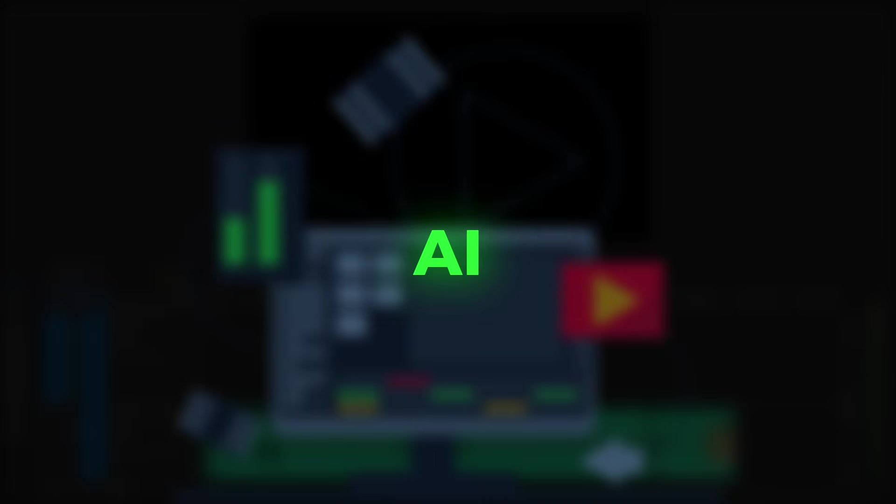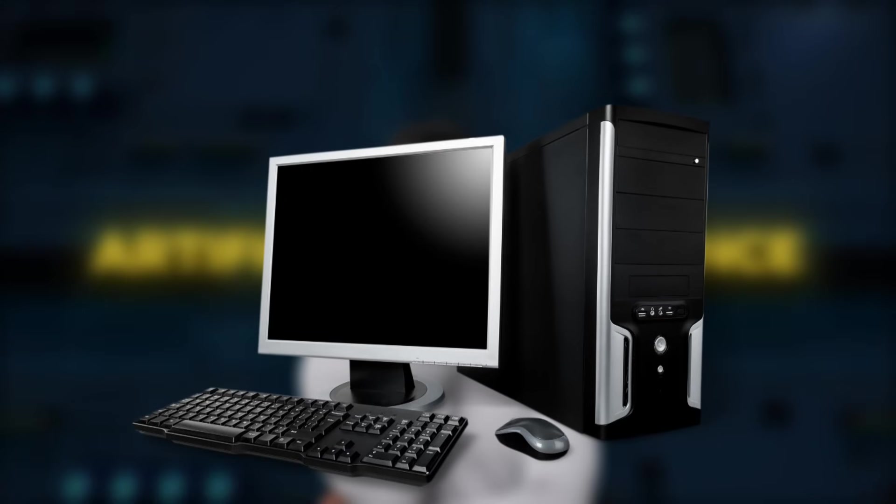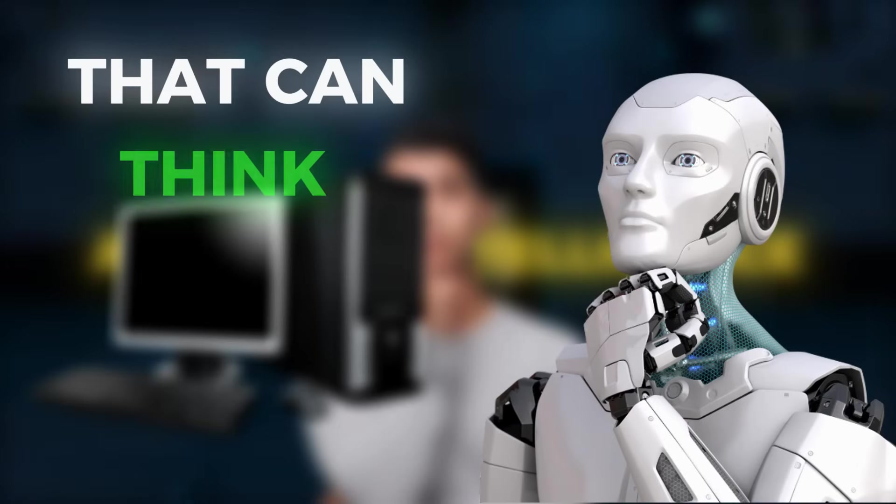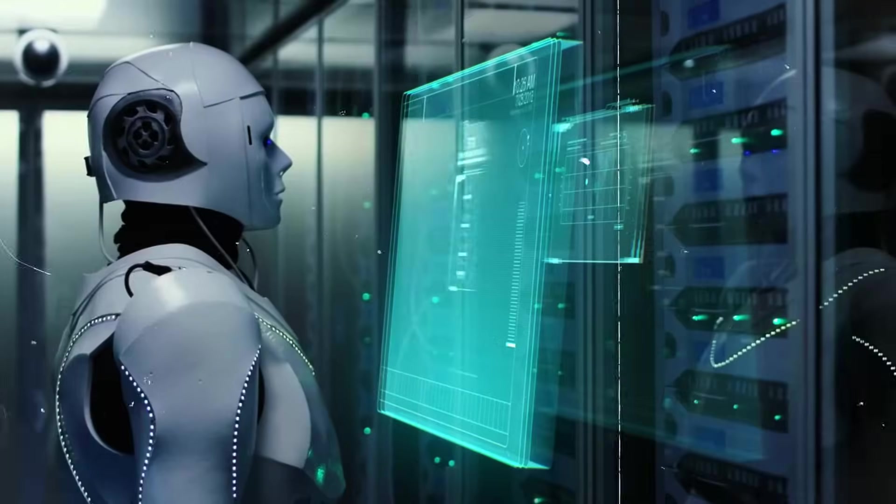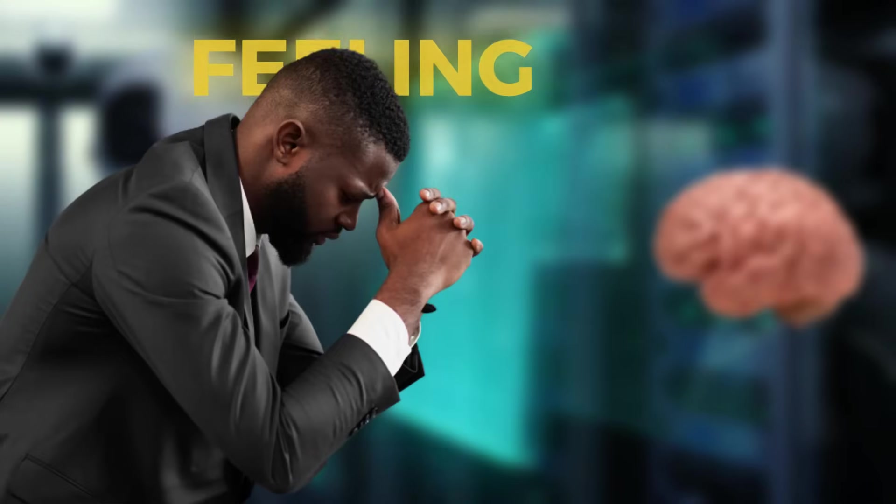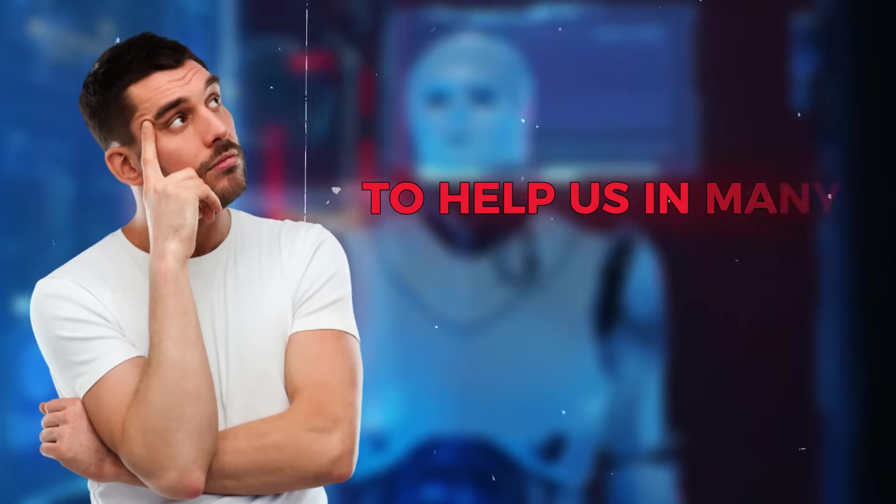Let's get started with AI. AI stands for Artificial Intelligence. It means computer programs or robots that can think, learn, and solve problems just like humans. Although AI doesn't have a real brain or feelings, it works by mimicking human thinking to help us in many ways.